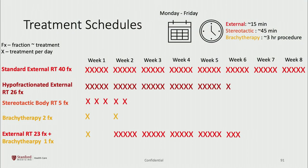Radiation treatment courses tend to be prolonged over many weeks. By spreading the radiation over multiple treatments — called fractions — we're able to maximize tumor death while minimizing normal tissue side effects. All of these different schedules are biologically equivalent with respect to radiation dose, tumor control, and side effects. Depending on the technique, the schedule differs: external radiation can be delivered over eight weeks, six weeks, or one and a half weeks. The schedule is recommended based on your risk group, treatment fields, urinary function, sexual function, and other medical comorbidities.